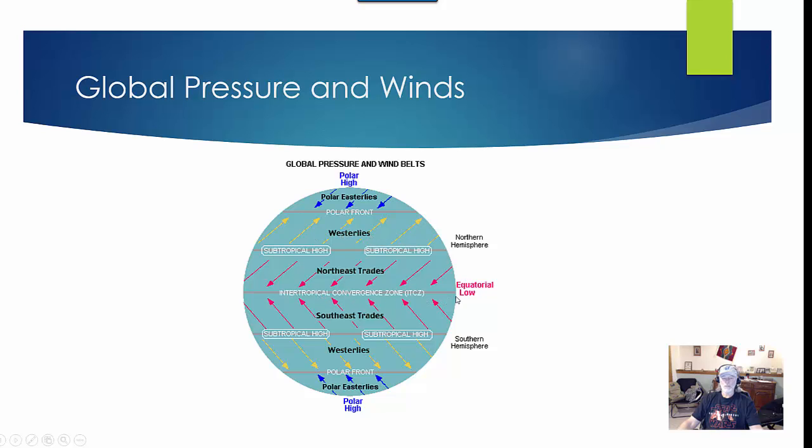Interesting note here: you get to the equatorial low, that's where you have your rainforest, your jungles. Much of your large global deserts are located in this subtropical high at about 30 degrees north and south latitude.